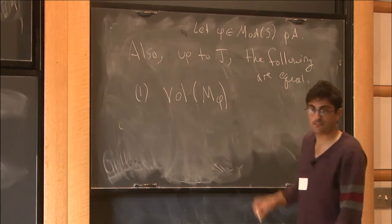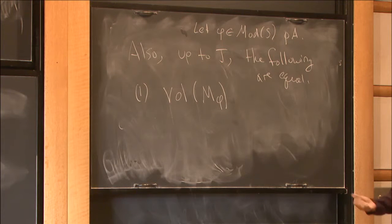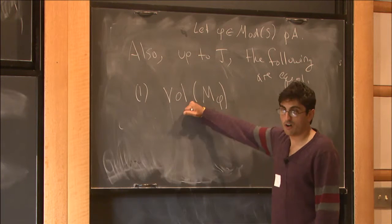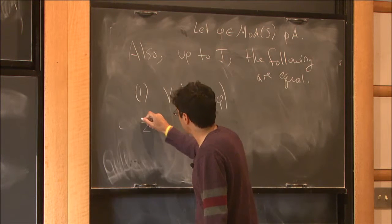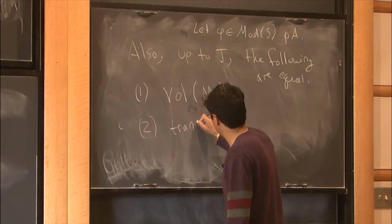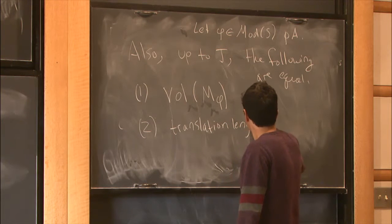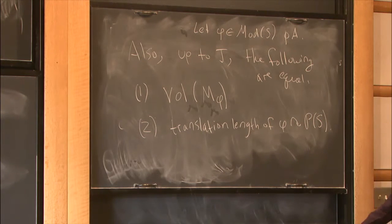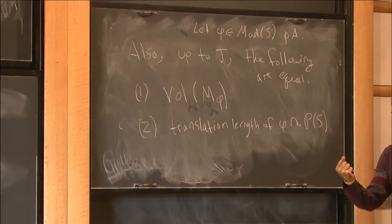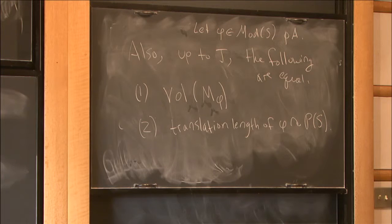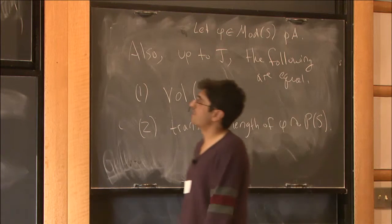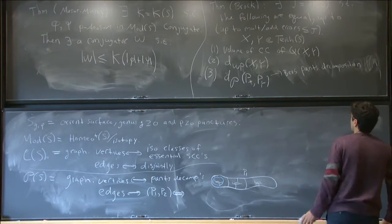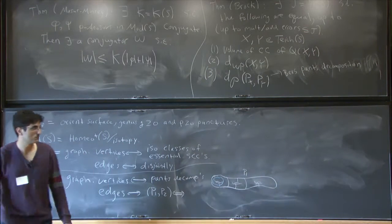I can form the mapping torus for the mapping class φ. A theorem of Thurston tells you it's hyperbolizable, so there's a complete hyperbolic structure on this manifold, and its volume is the first thing on this list of two. The second is the translation length of φ acting on the pants graph — the minimum distance that φ moves any vertex in the pants graph. So this relates the geometry of Teichmüller space, volumes of hyperbolic 3-manifolds — either fibered or quasi-Fuchsian — all to this combinatorial object, the pants graph.